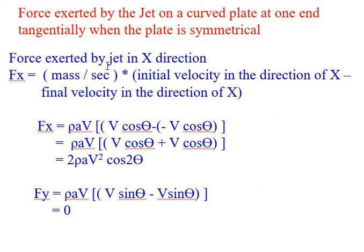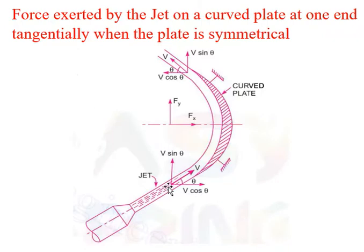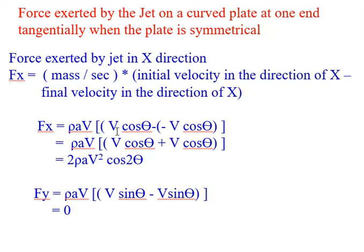The force exerted by the jet in the x-direction, Fx, is equal to mass per second, that is rho A V, into the initial velocity in the direction of x minus the final velocity in the direction of x. From the figure, the initial velocity is V cos theta (positive direction) and the final velocity is minus V cos theta (opposite direction). Therefore, Fx = rho A V (V cos theta minus of minus V cos theta) = 2 rho A V² cos theta.